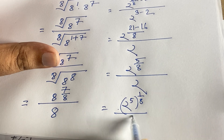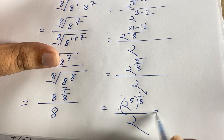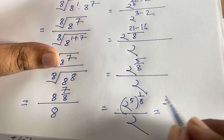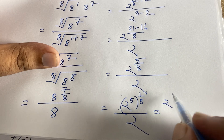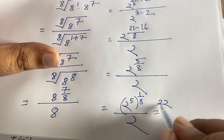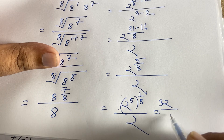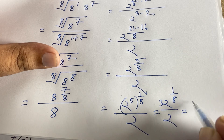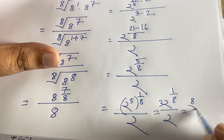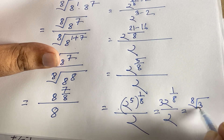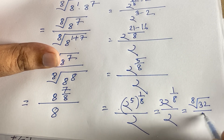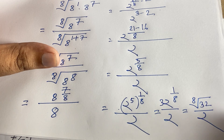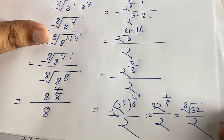So our final answer is the 8th root of (32/2). This is our final answer. Thank you all.